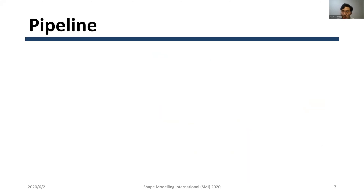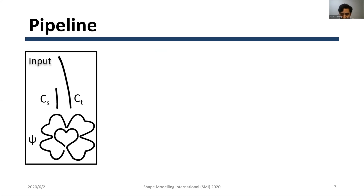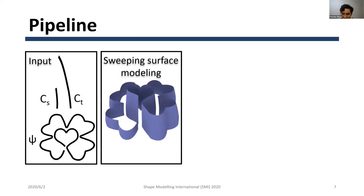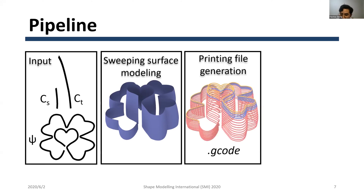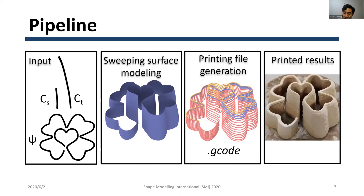Here is the basic pipeline for our framework. The input consists of three curves joined with B-spline or predefined lines, as the CS, CT, and phi curves shown in the figure. The user completes drawing the three curves on a two-dimensional plane. After that, a model conforming to printing constraints is automatically generated. A single continuous path is then generated and stored in G-code format, and finally a 3D printer fabricates the model.